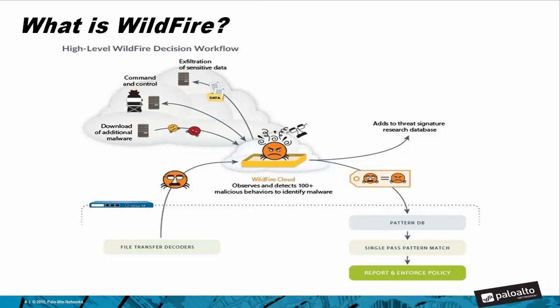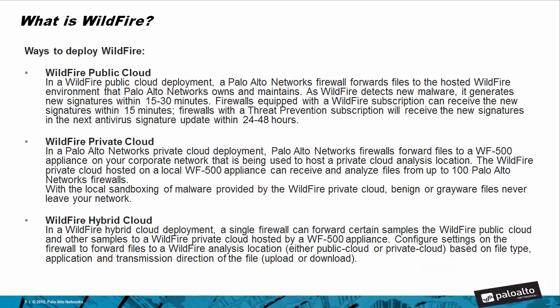Next, on to the different ways you can deploy WildFire. You can deploy it in a WildFire public cloud, a private cloud, or a WildFire hybrid cloud. In a public cloud deployment, the Palo Alto Networks Firewall forwards files to a hosted WildFire environment that Palo Alto Networks owns and maintains. As WildFire detects new malware, it generates new signatures within 15 to 30 minutes.